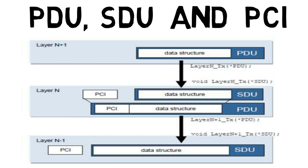Next is the service data unit. When the signal comes out of RTE to the COM layer, these signals are the SDU for the COM module. The COM module adds one header, which is called PCI — protocol control information. The SDU plus PCI together is called a PDU. Once the combined SDU and PCI comes out of the COM module, it is called an IPDU. The signal coming inside the COM module is called the SDU.